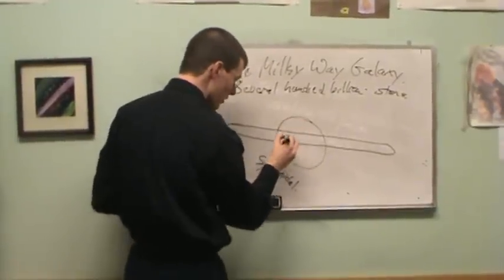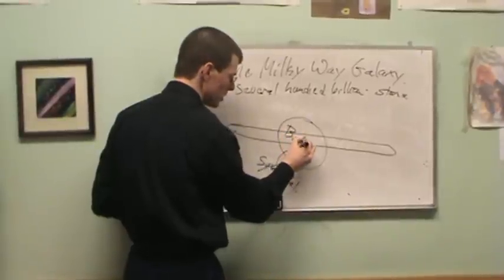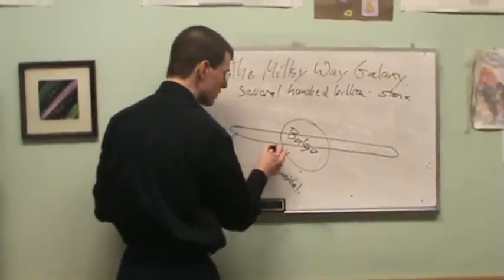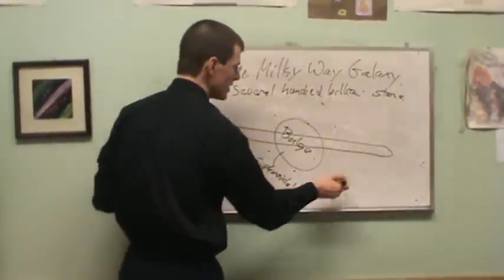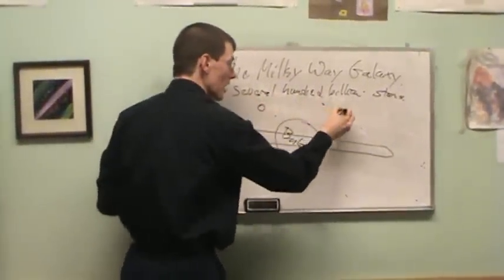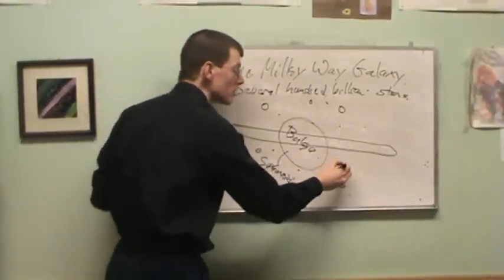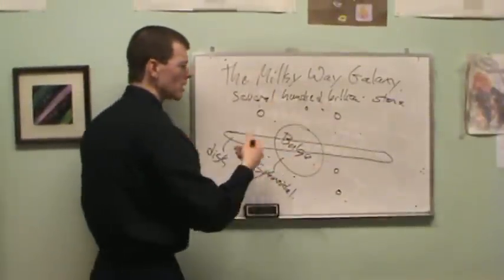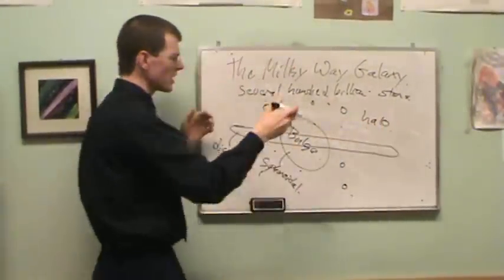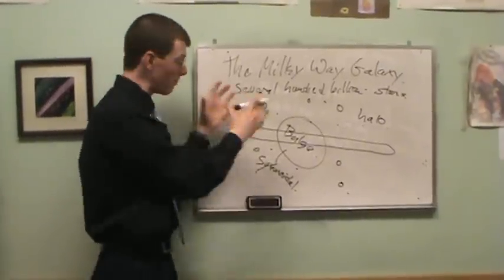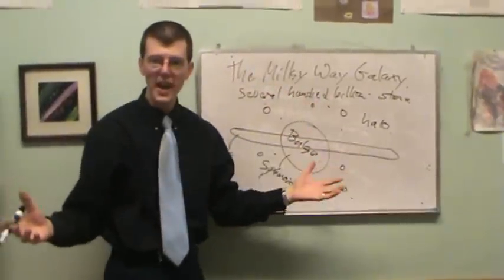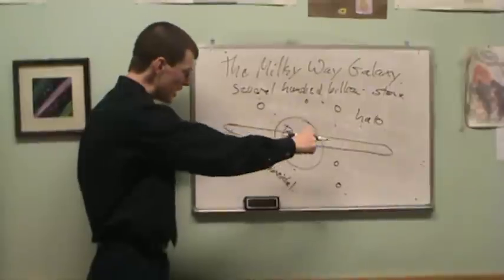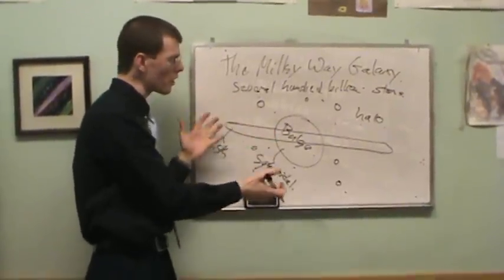The spheroidal part includes the central blob called the bulge at the center of our galaxy, and then it smoothly goes out from there. There are spheroidal stars scattered all the way around, and the globular clusters — tightly packed balls of several million stars — are included in the spheroidal population. The outer parts we generally call the halo. So the spheroidal part includes both the bulge and the halo. The galaxy has several hundred billion stars: the disc, the bulge, and the halo.